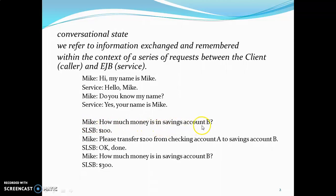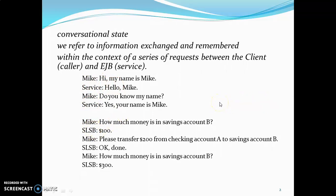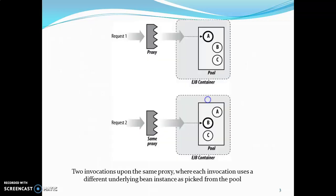Mike next asks how much money is in his savings bank account, and the stateless session bean gives the answer as one hundred. Mike then requests a transfer of two hundred from checking account A to account B, and the service responds 'done'. Mike then asks how much money is in account B and the service says three hundred. This series of requests between the client and EJB service represents the conversational state — information exchanged and remembered within the context of service requests between the client and EJB.